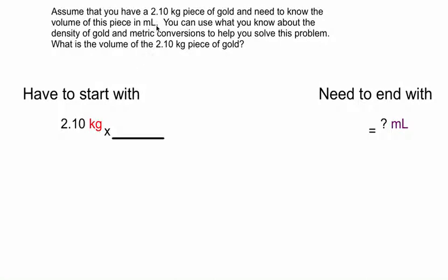So what I do initially is I just write down what I'm looking for first. I always figure out what I'm trying to end with, and I want to know milliliters of this piece of gold. And then I look at the problem, and the only number given to me here is the mass of this piece of gold, 2.10 kilograms. So I write that down in the beginning. And then I put a multiplication sign in a horizontal line, because I know I need to get rid of kilograms. So I'm going to put kilograms down here, and I'm going to continue to run conversions until I end up with milliliters. Now you may or may not know anything about the density of gold or some of these metric conversions. So here's some conversions that may help you out.